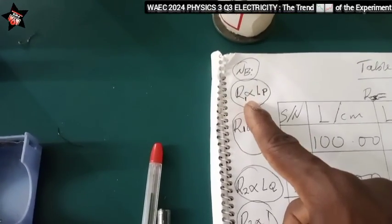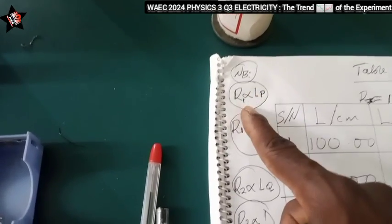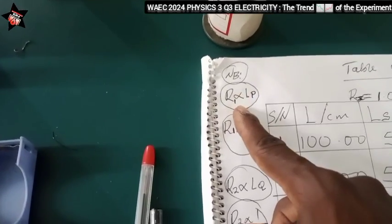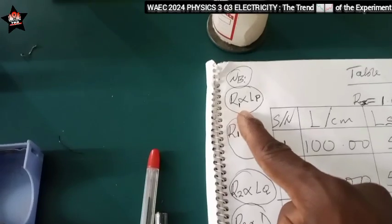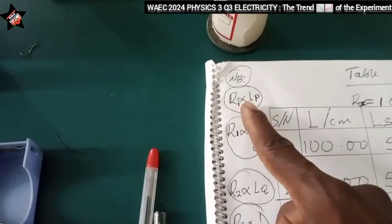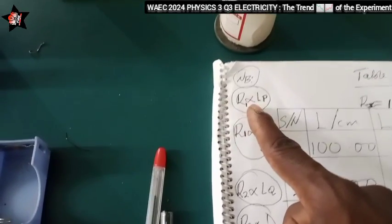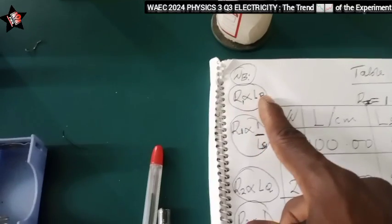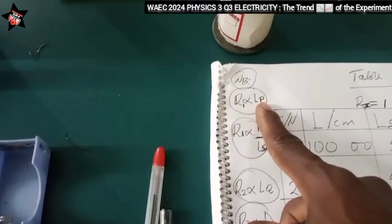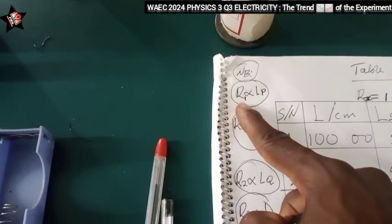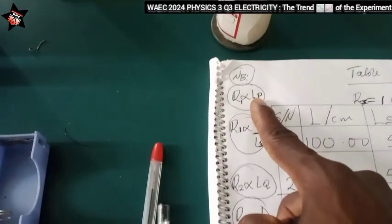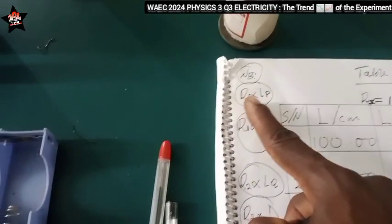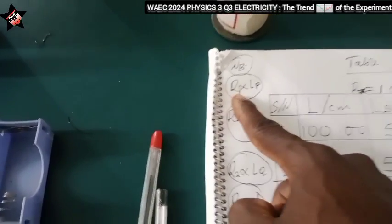From the factors that affect the resistance of wire: we have the temperature, we have the length of the wire, we have cross-sectional area, we have resistivity or nature of the wire. So the length of the wire and the resistance of the wire they have direct relationship. That is, decrease in the length of the wire will cause decrease in the resistance of the wire, and increase in the length of the wire will cause increase in the resistance of the wire.